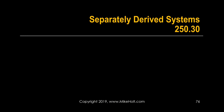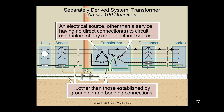Let's talk about separately derived systems, NEC 250.30. Before we get into 250.30, let's look at the definition. This is the primary winding, and there's magnetic coupling between the primary winding and the secondary winding — that's a transformer. Because there's no direct electrical connection between line one, line two, line three and the neutral directly to any of the line conductors coming in, this is called a separately derived system.